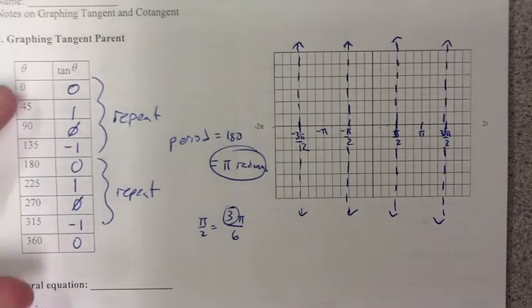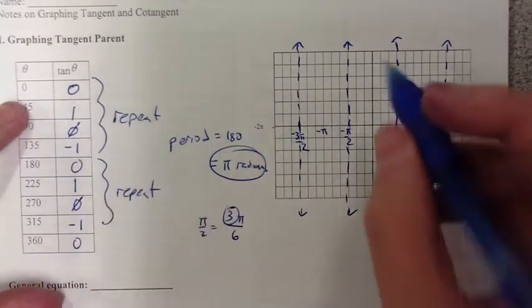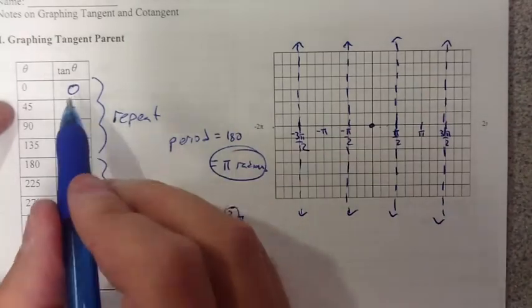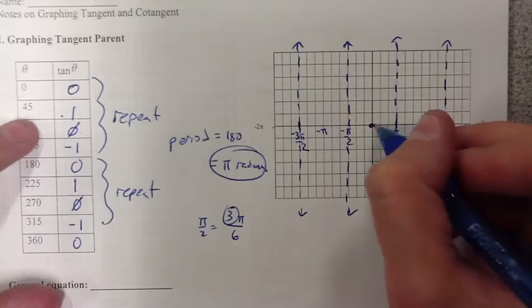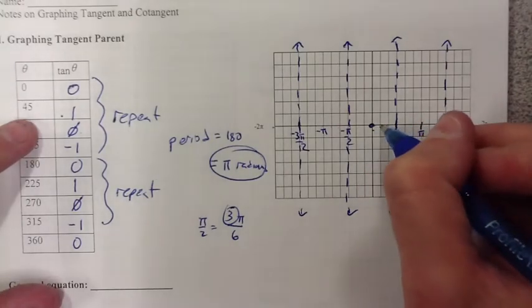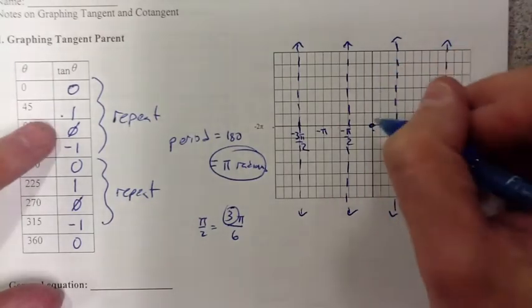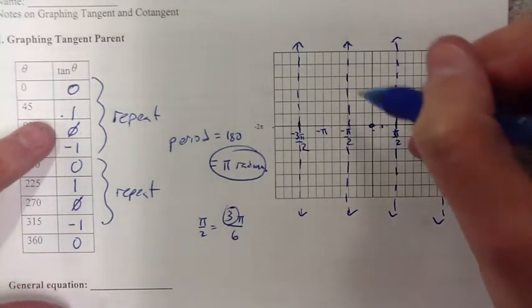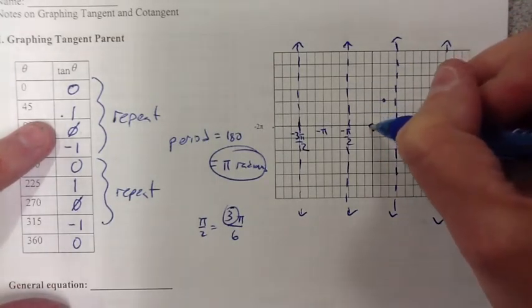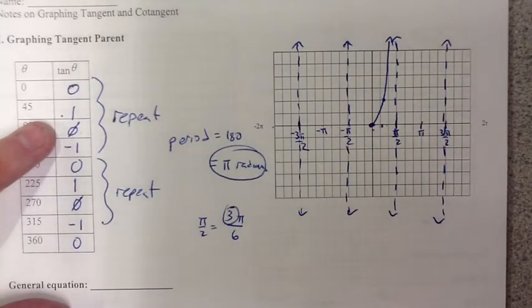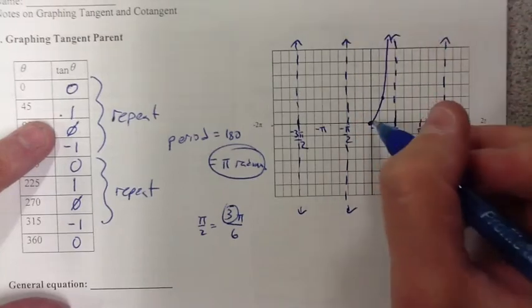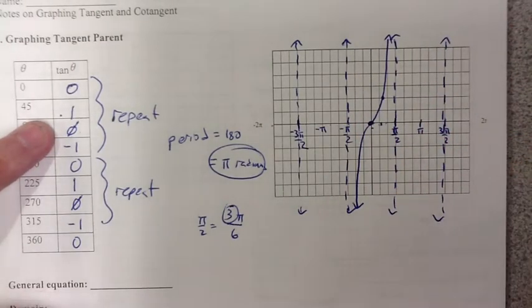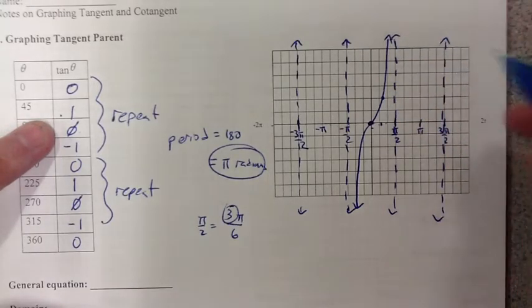Now to graph tangent, remember we're just going to graph a few points. At 0, the value is at 0. At 45 degrees, which is in between 0 and π/2, the value is 1. So that's telling us tangent goes up towards the asymptote in this direction. On the other side, it's going to go down, not back up. It almost looks like a cubic graph.